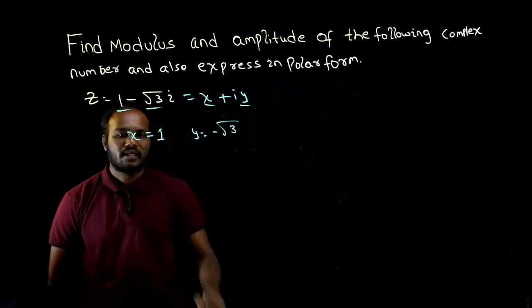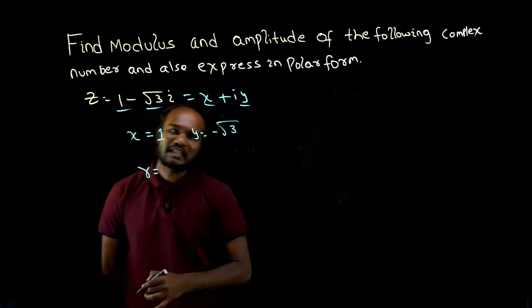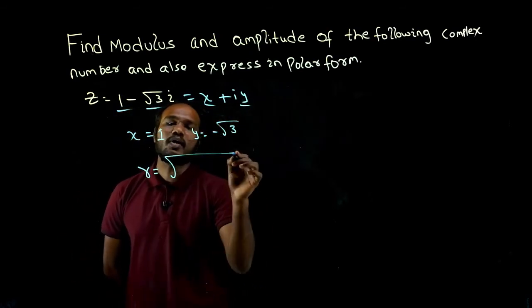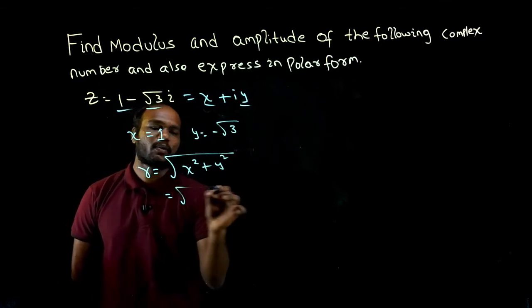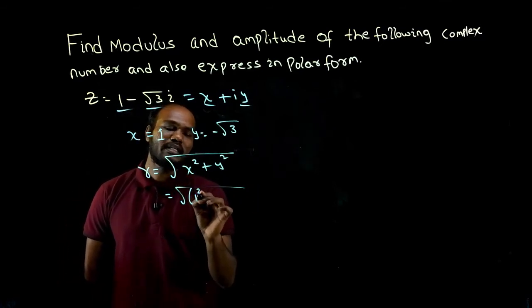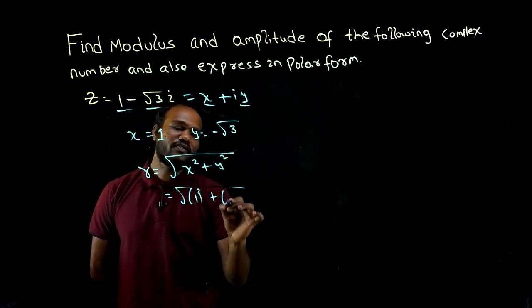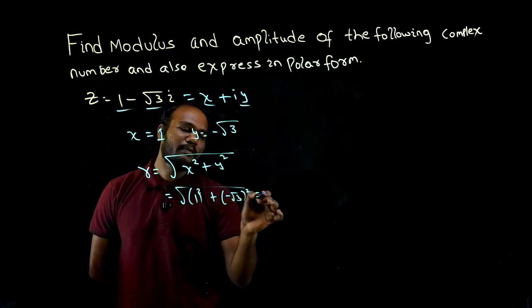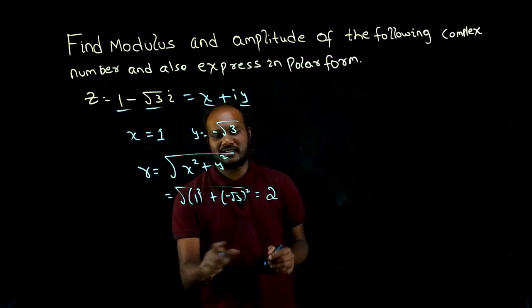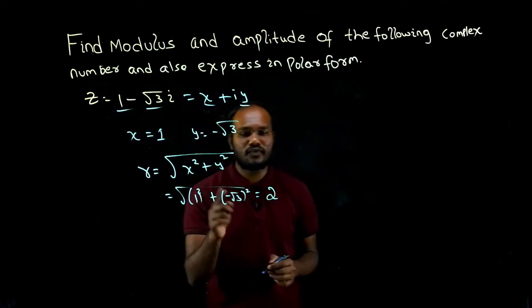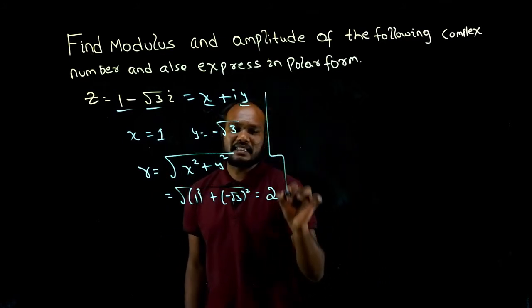So how to find modulus? We have a formula: r equals root of x squared plus y squared. That is root of 1 squared plus minus root 3 squared. Since it's a square, the sign doesn't matter. Root 3 whole squared is 3, 3 plus 1 is 4, root 4 is 2. So the modulus is 2.